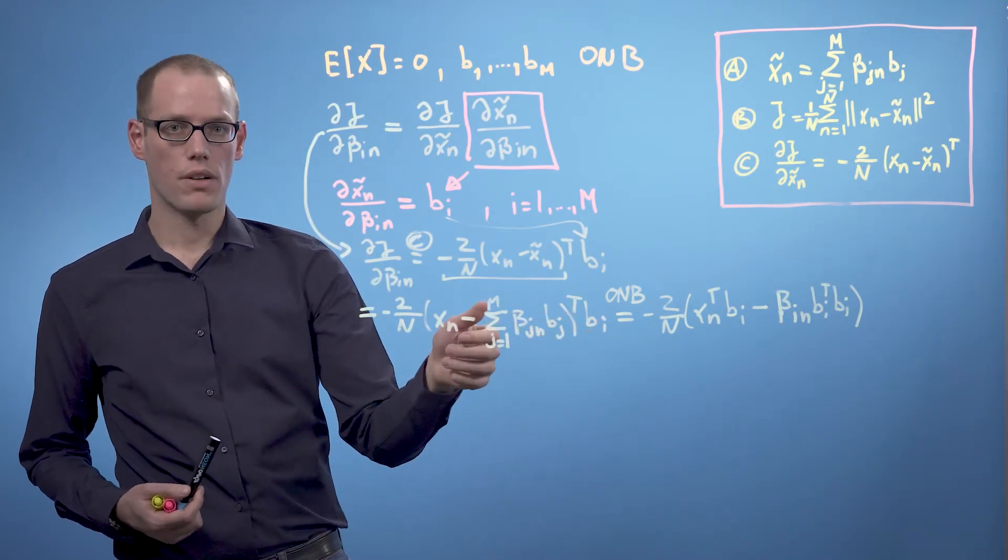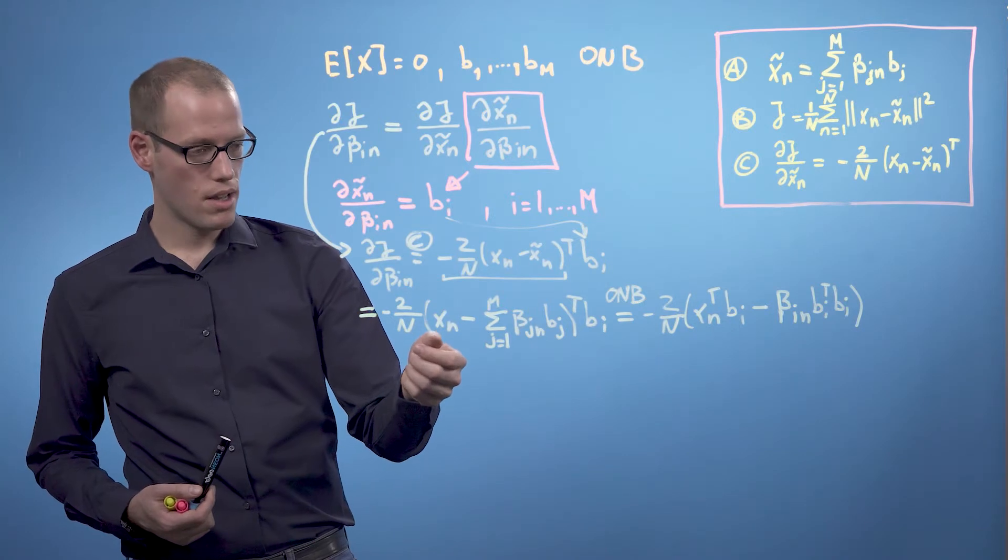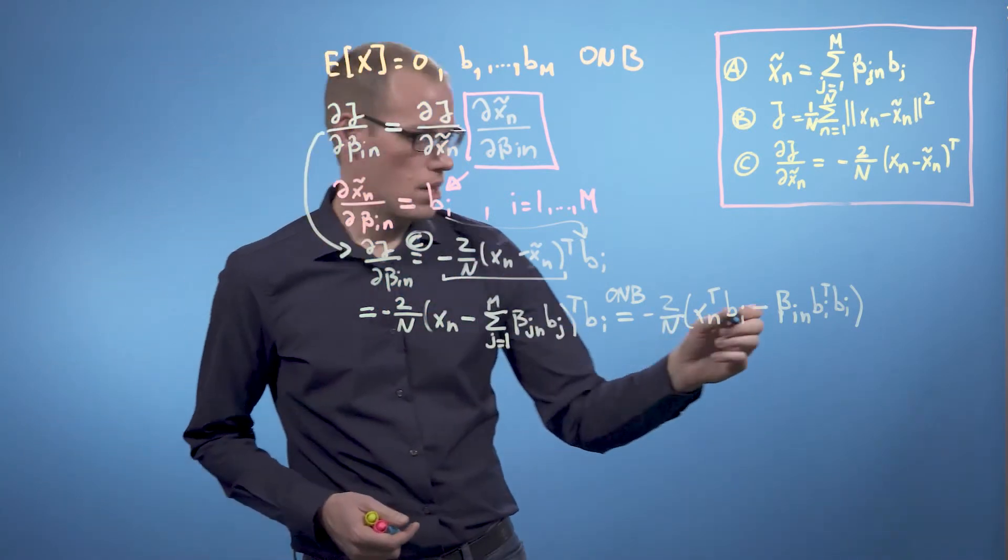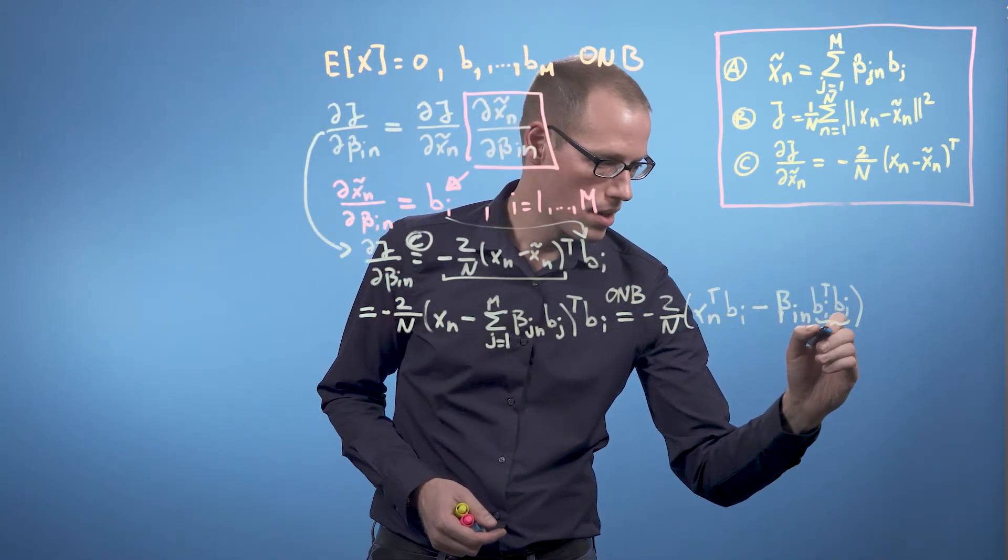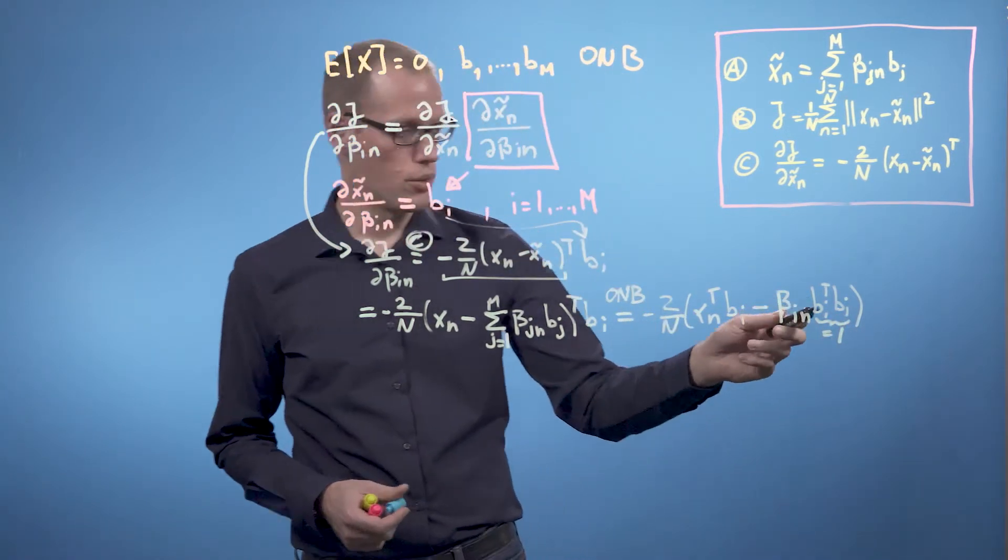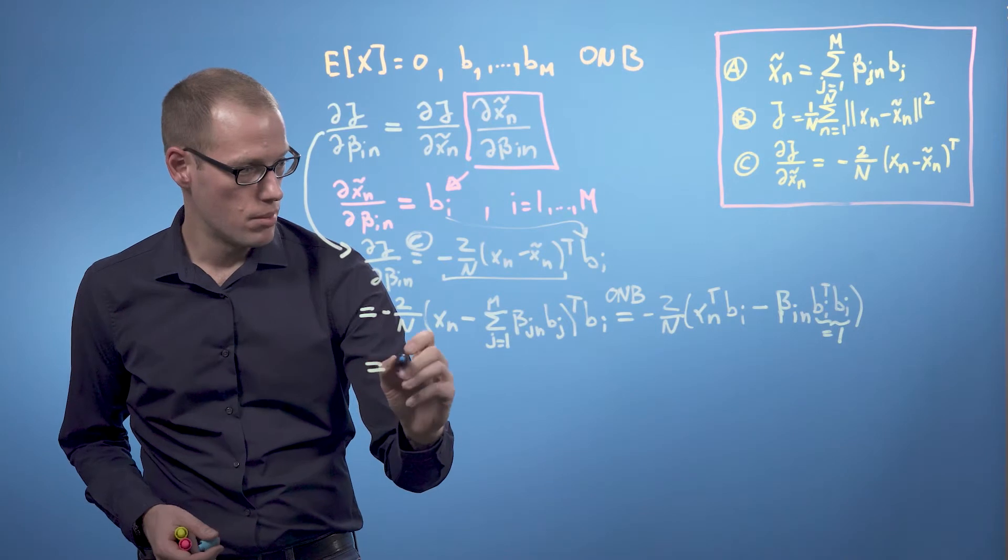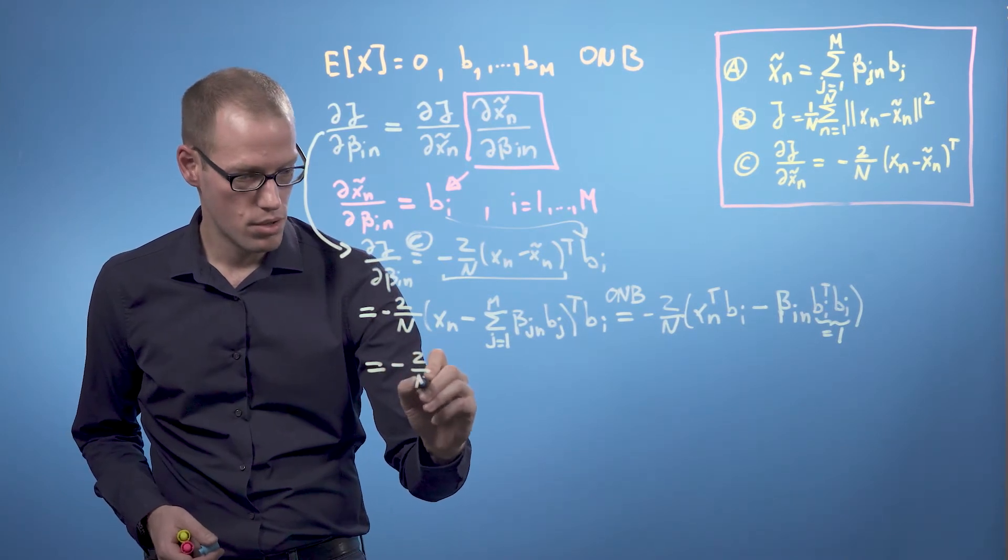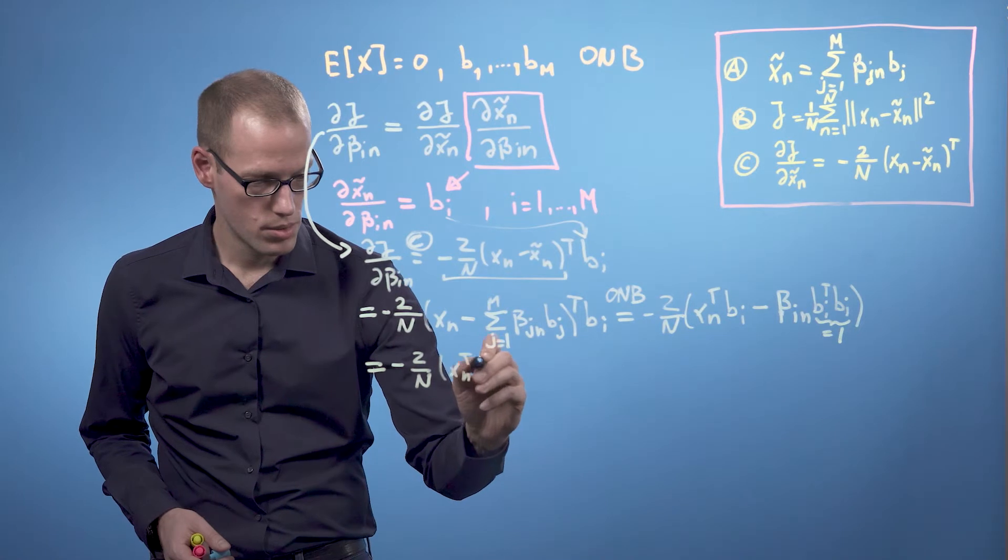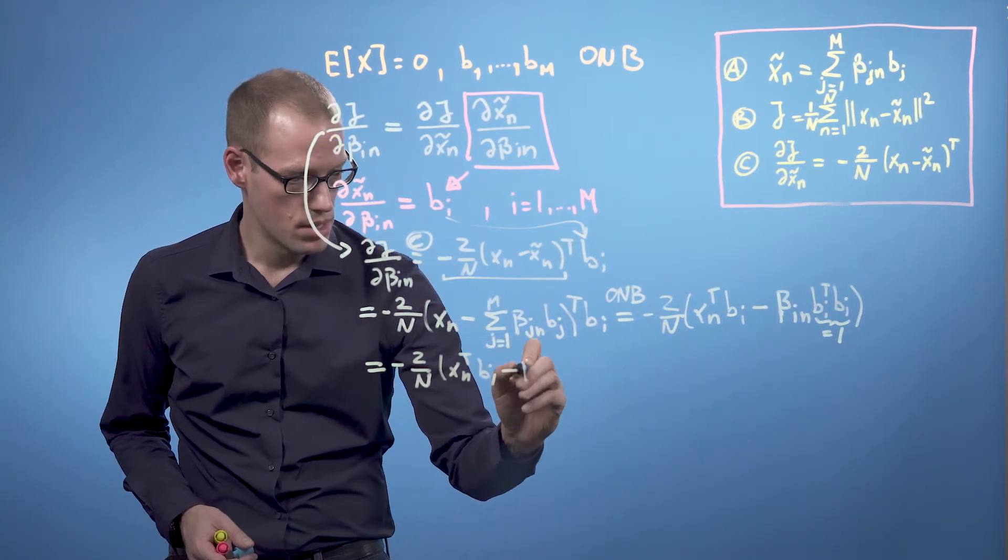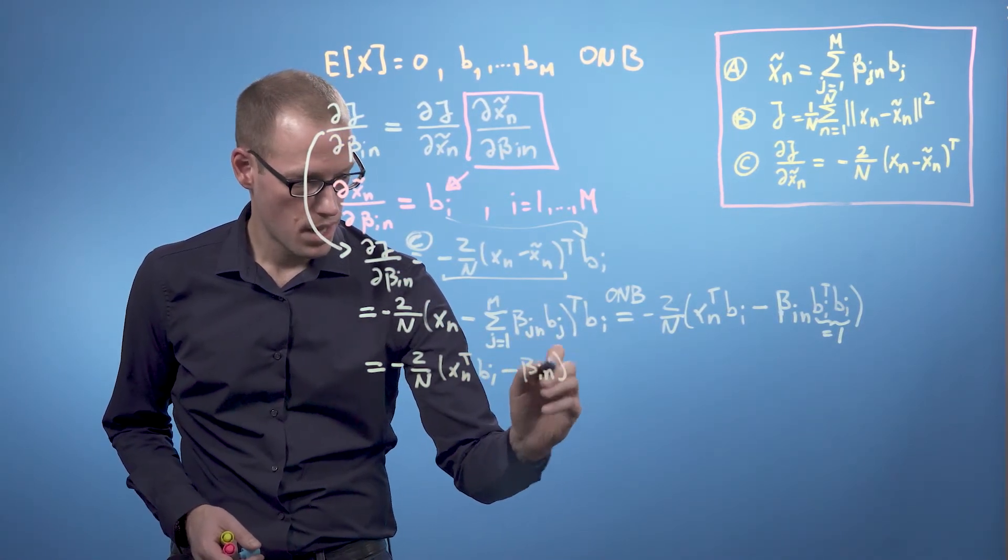And since bj transpose times bi is 1 if and only if i equals j and otherwise 0, we end up with only one term which will be 1. So we end up with minus 2 over n times xn transpose bi minus beta in.